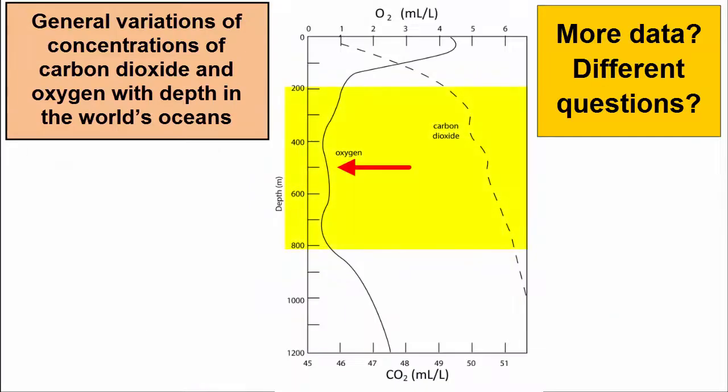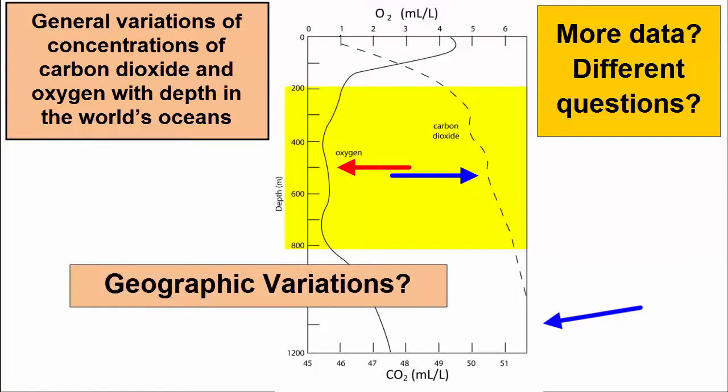In the graph, what's going on between 200 and 800 meters depth to oxygen? What process is at work there that seems to have such a big impact on oxygen, but not on carbon dioxide? And what happens at depths greater than 1000 meters, where we no longer see any data? And what variations, if any, exist across latitudes and longitudes in the oceans?